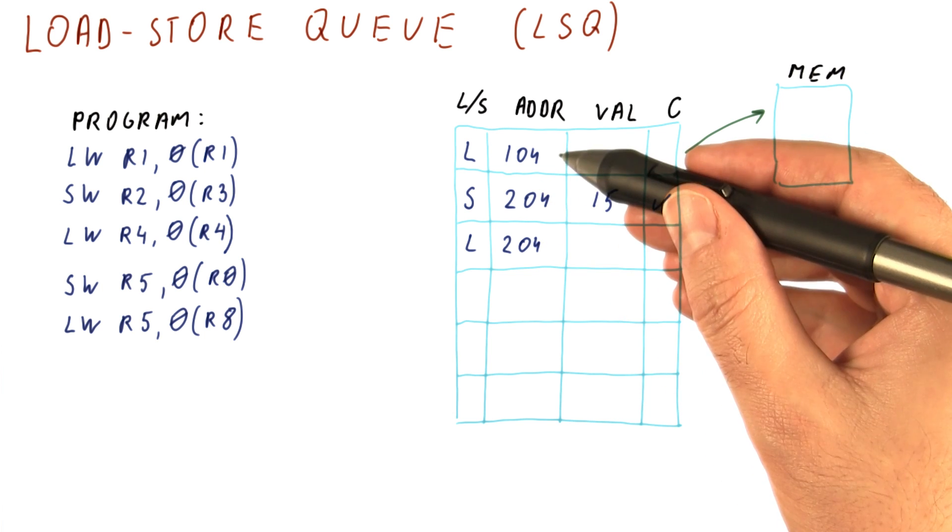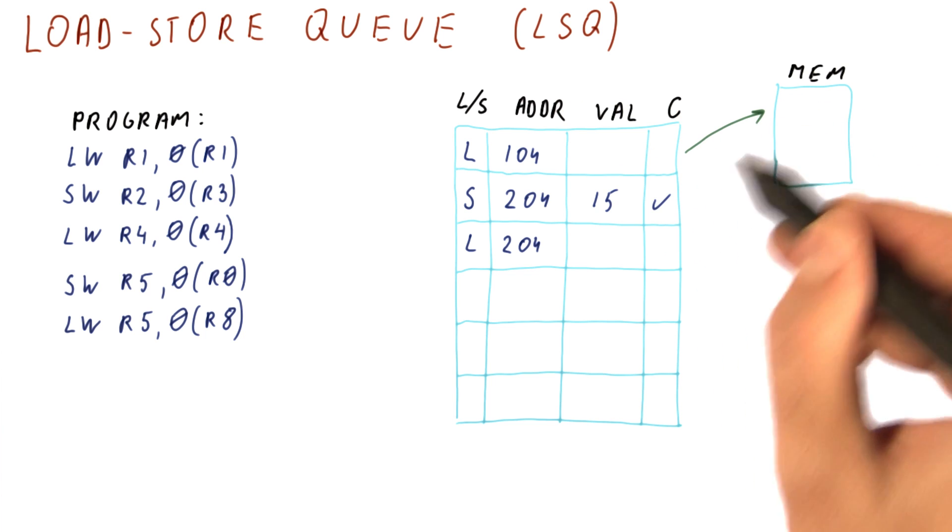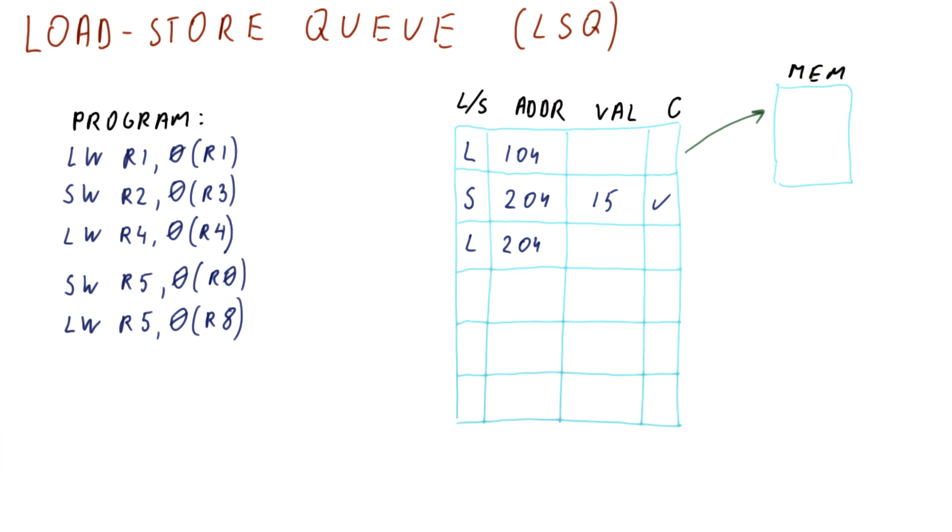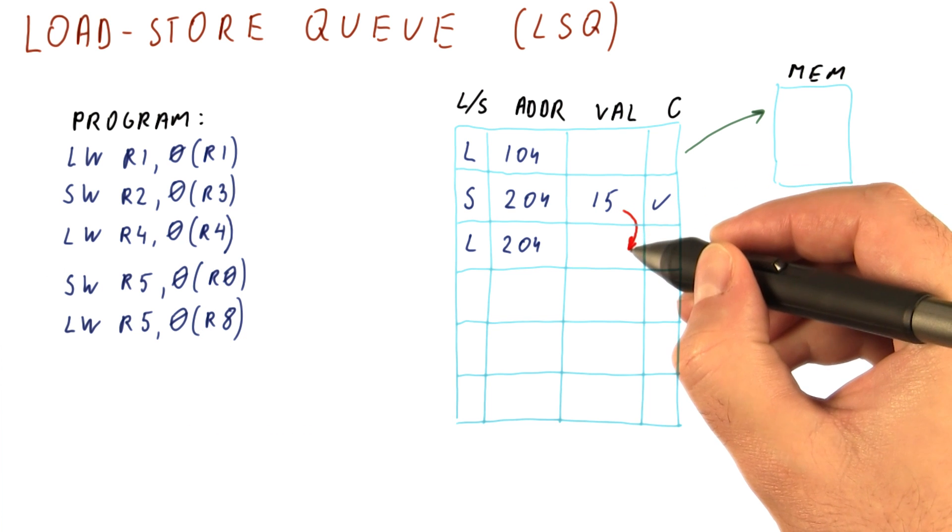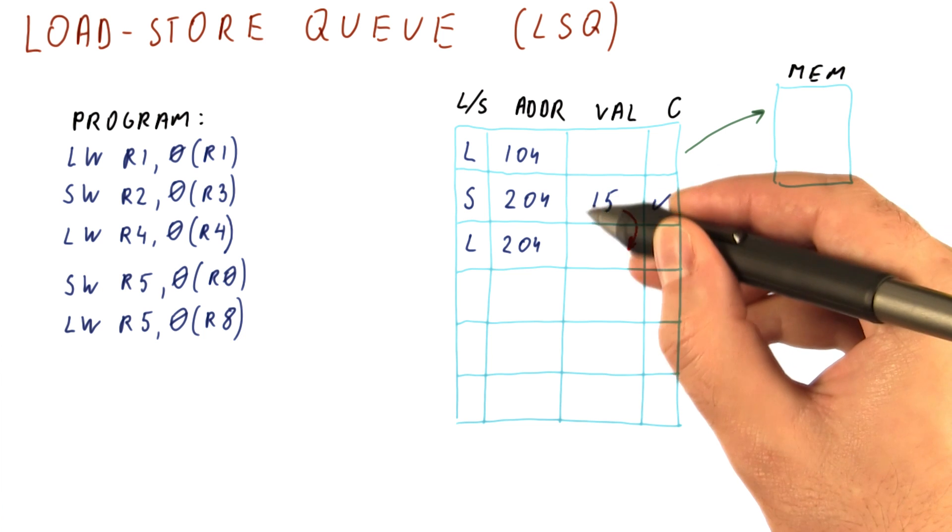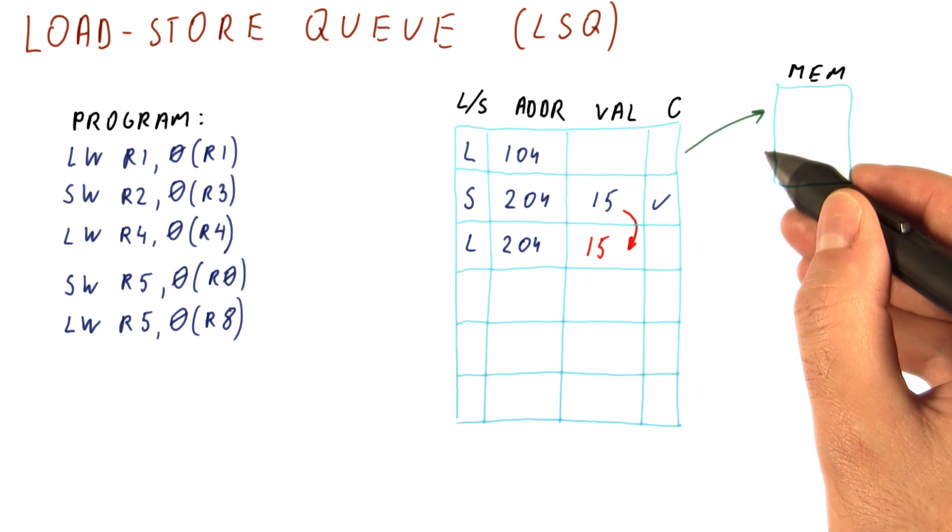If there is no matching store, like this case for the first load because there were no stores, we go to memory. If there is a matching store, we do not go to memory. Instead, we do what is called the store to load forwarding, where we simply take the value from the store and that is the value that the load produces and we never go to memory.